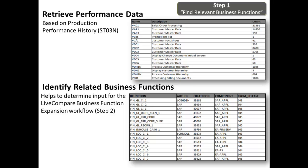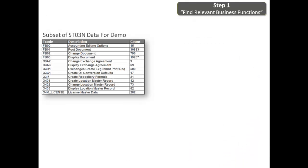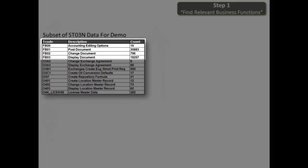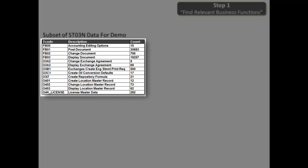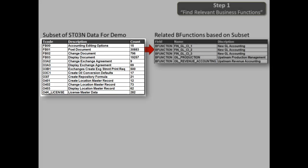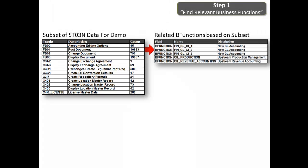Let's take a closer look at this subset of STO3 data. Here we can see some used financial accounting transactions, as well as the T-codes related to the oil and gas industry solution. And here are the business functions discovered by Live Compare based on this subset.